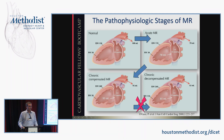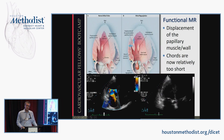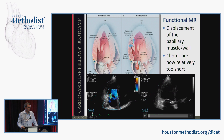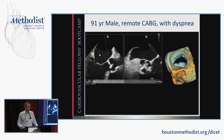Functional MR: in a normal ventricle, papillary muscles are in the right position, cords are the right length, and the leaflets coapt properly. After an infarct, lateral and apical displacement of the papillary muscle wall occurs — not necessarily papillary muscle ischemia, but the wall the papillary muscles attach to has remodeled. The cords did not get longer to compensate, so you get tethering of the leaflets. On echo, you see a hockey-stick deformity of the anterior leaflet, and you get MR because the cords are relatively too short.